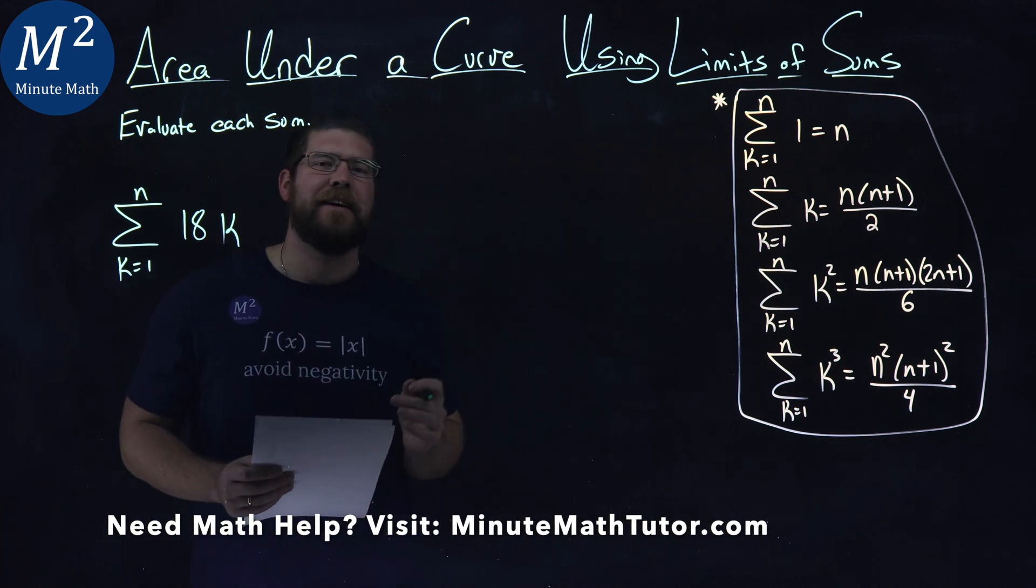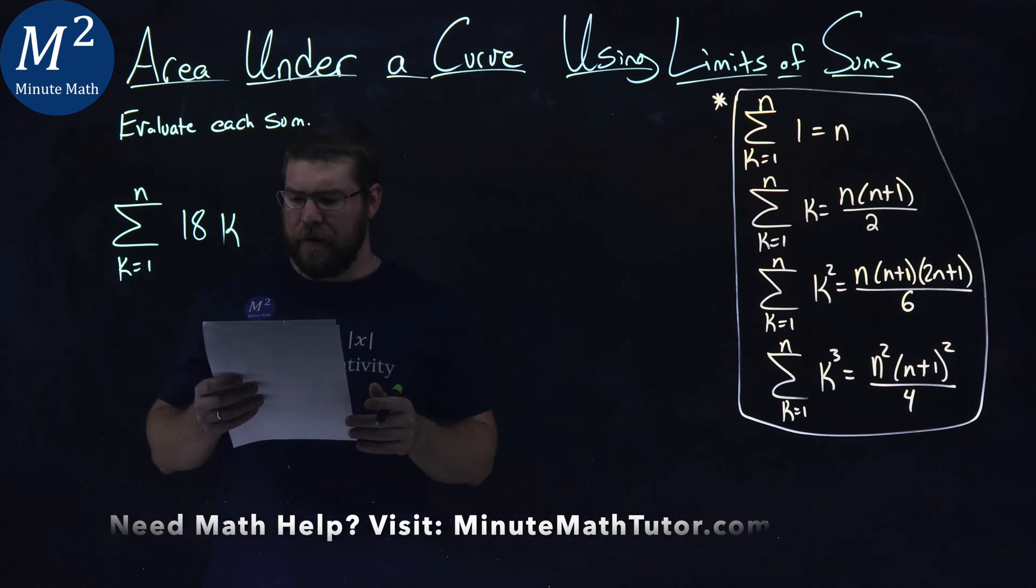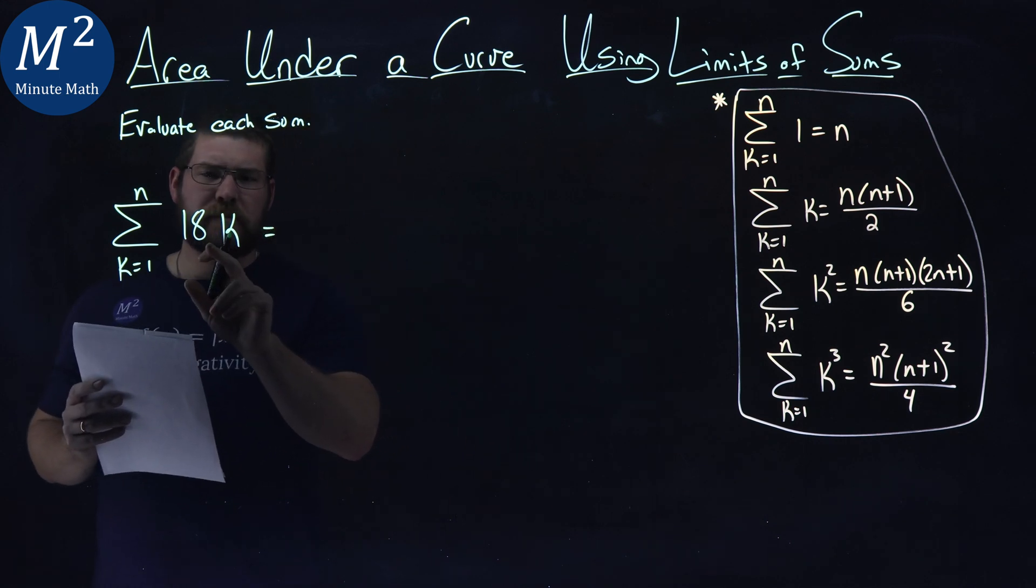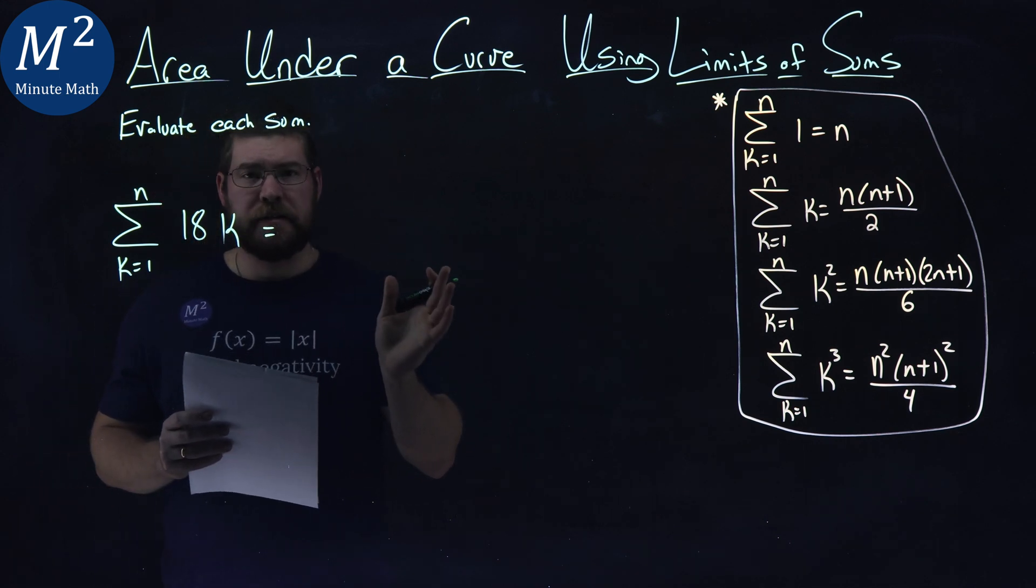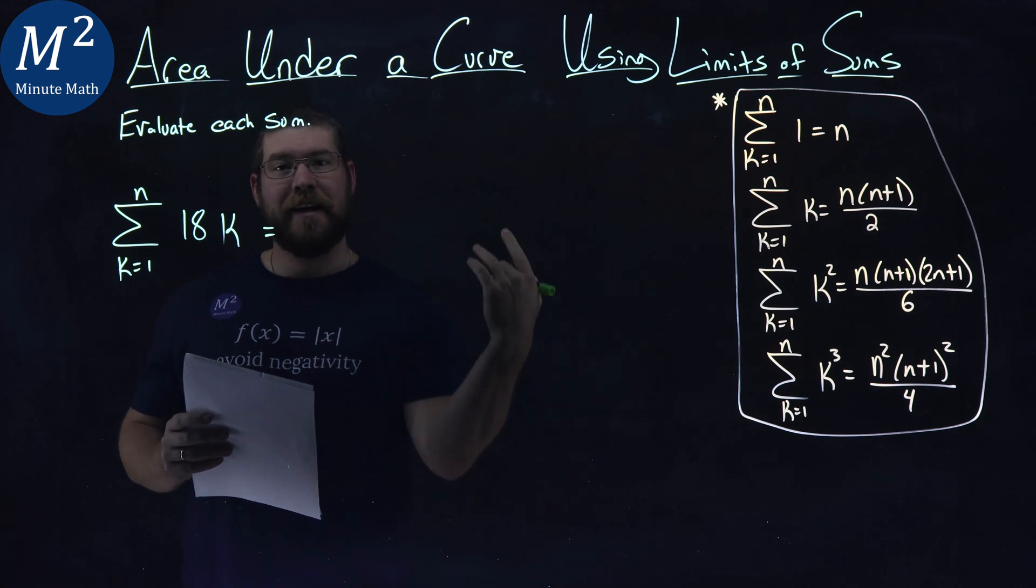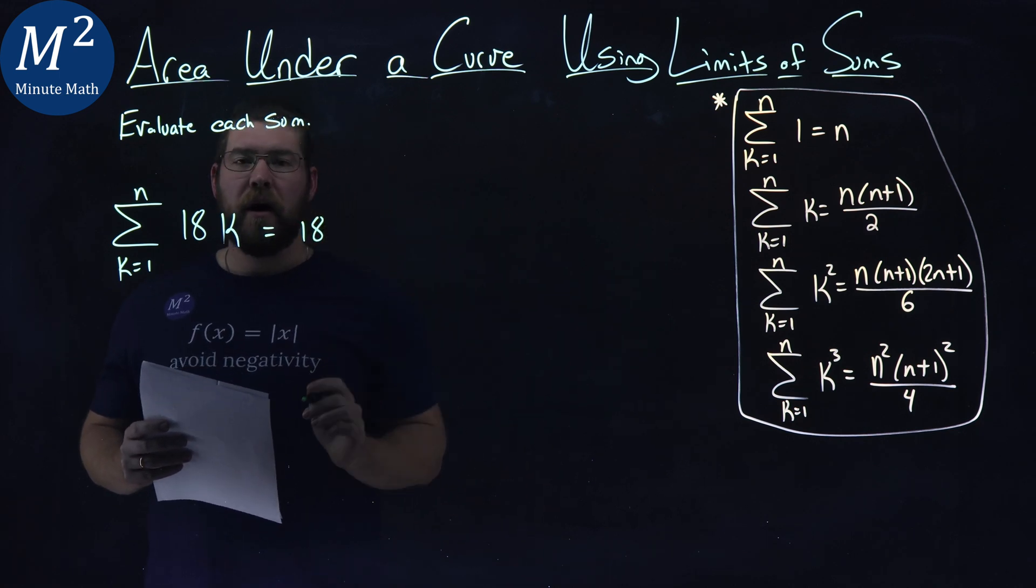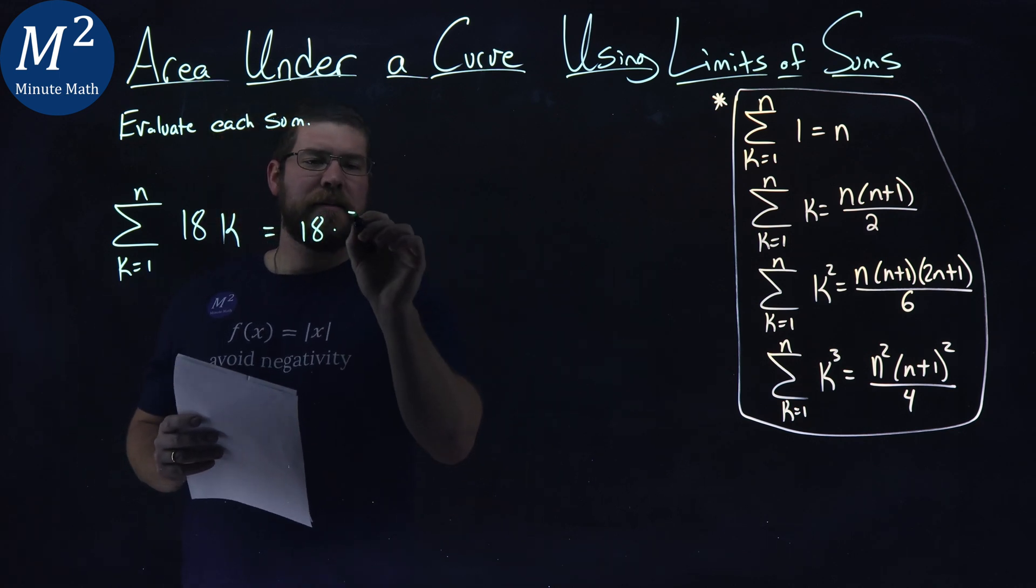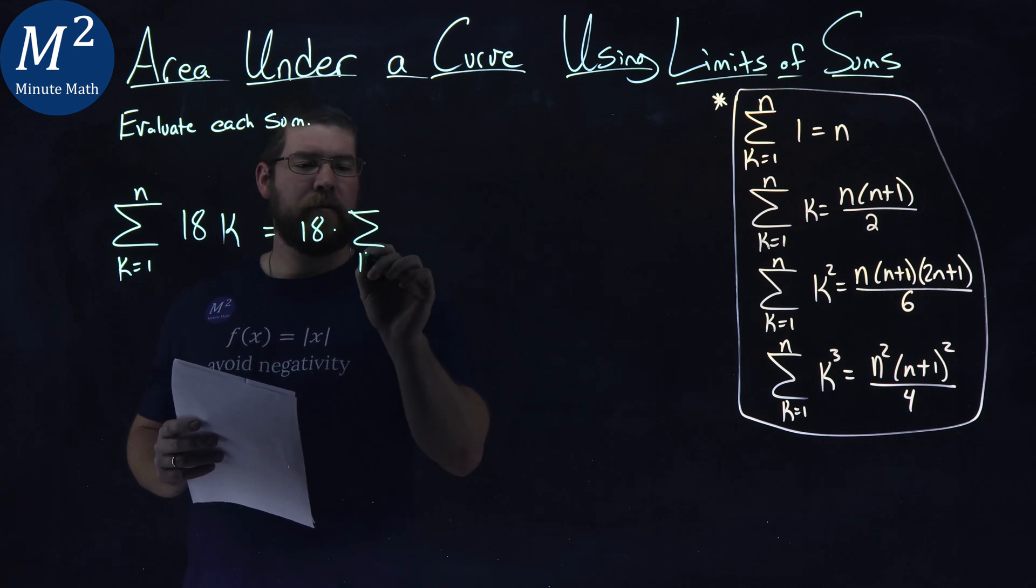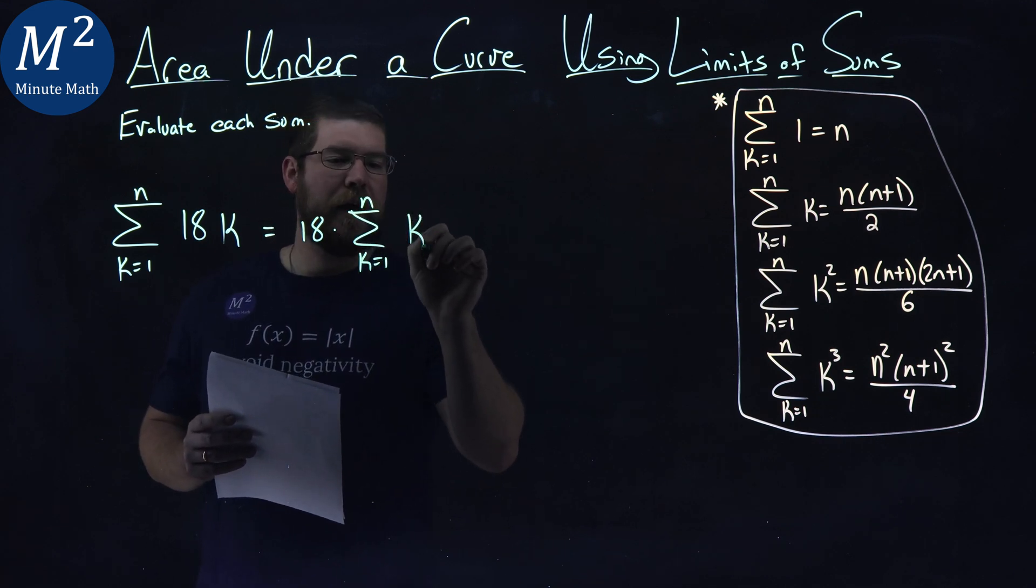We've used our definitions here and applied it a little bit. What I want to do here is to rewrite this. I don't need the constant 18, so if I put the constant 18 outside of the sum, we're left with 18 times the sum from k equals 1 to n of k.